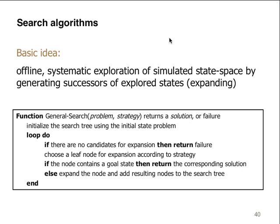The basic idea is we want to do it offline, which means we're going to know about the information, we're going to research it. We're not going to gather data while searching — we take the data and analyze it after we've obtained it. It's going to be a systematic exploration of simulated state space by generating successors of explored states, expanding the states. Sometimes the space is too big, so we do a sampling — taking a small portion of that space that's more manageable — and then we can search through there for a solution.